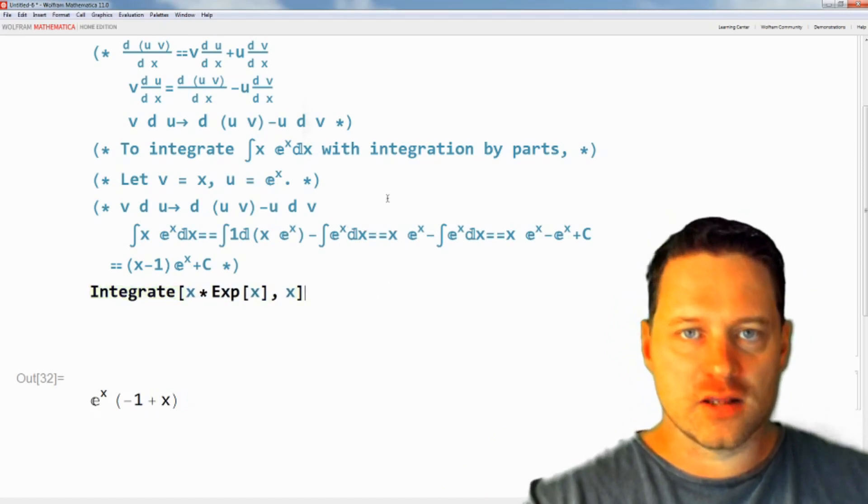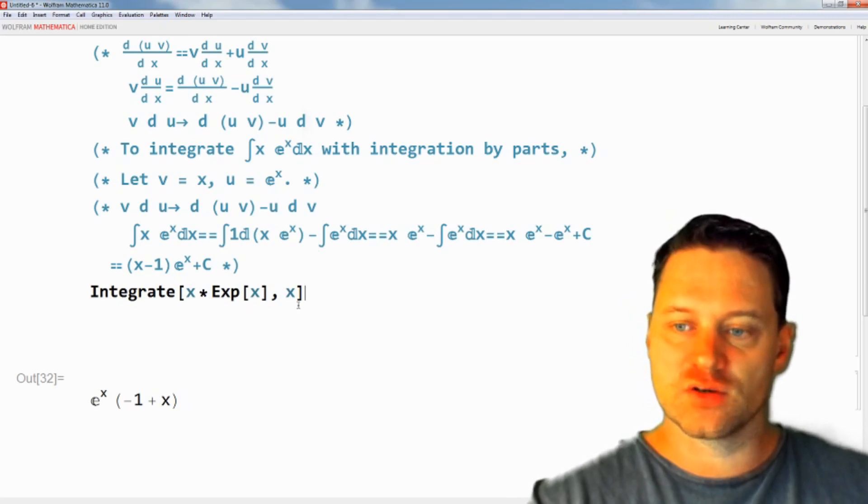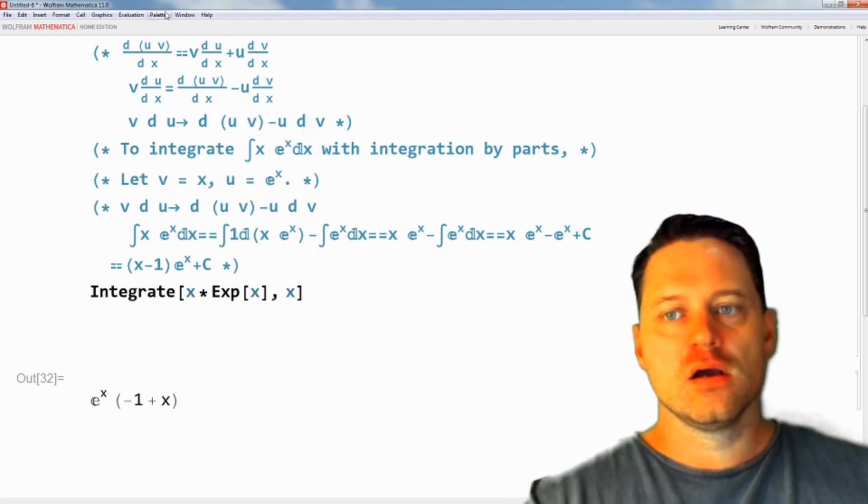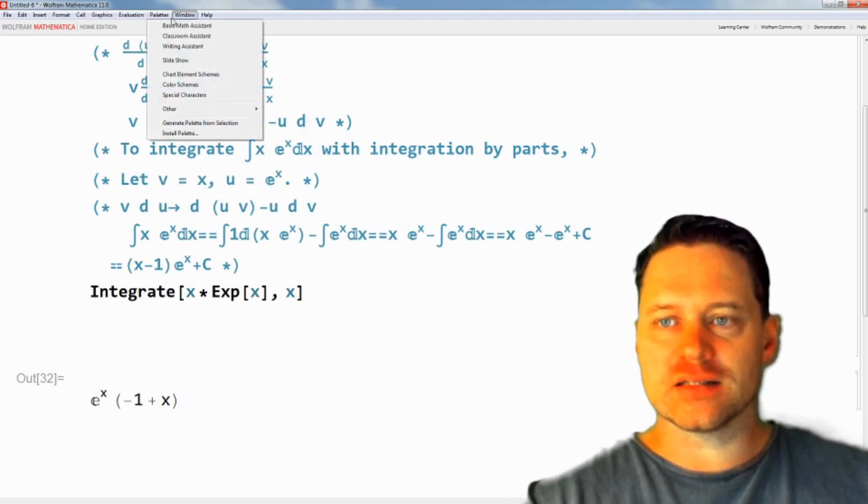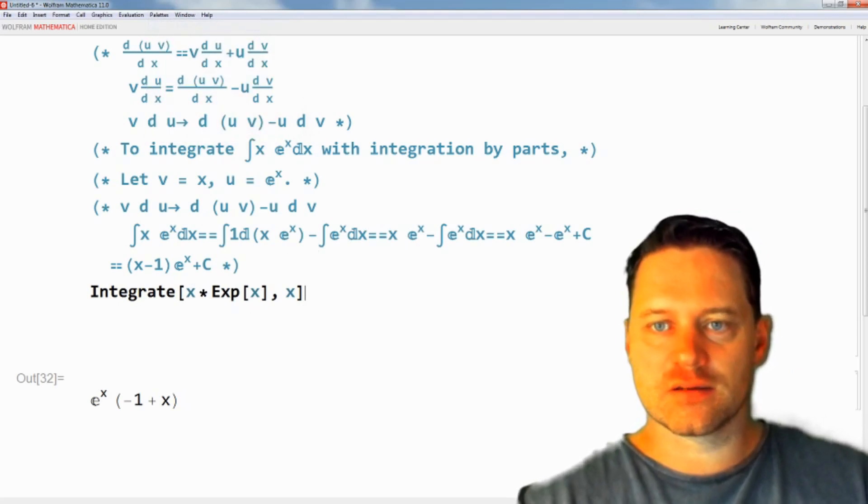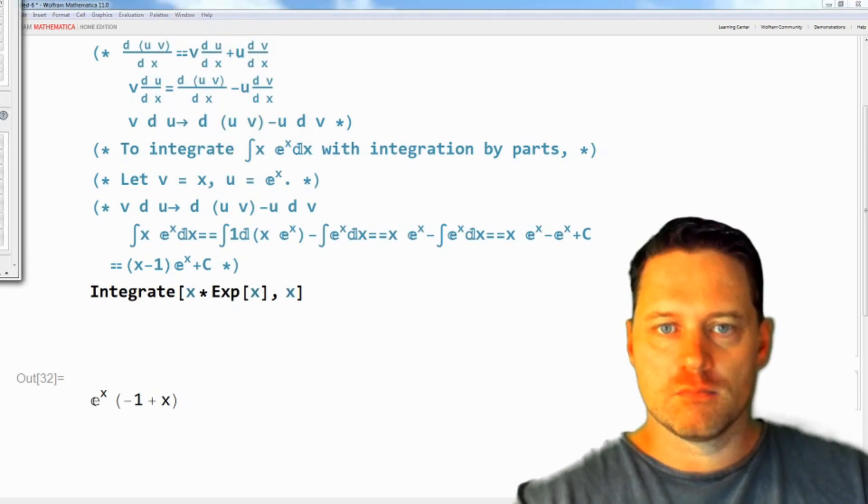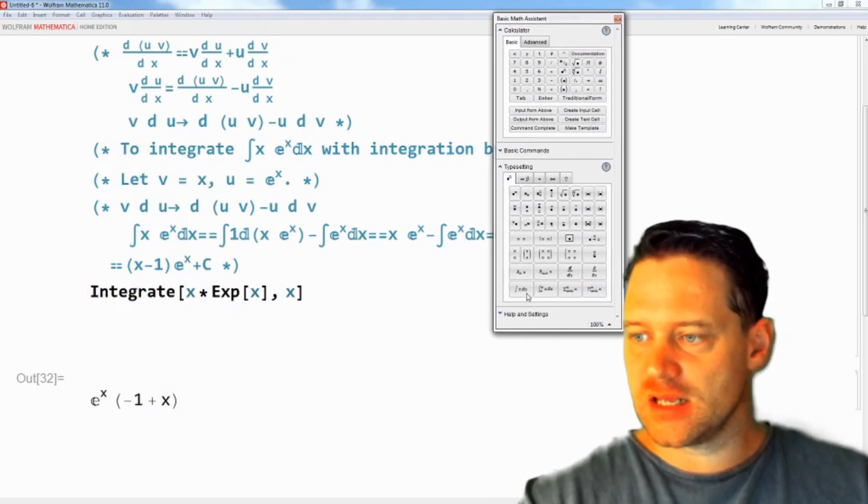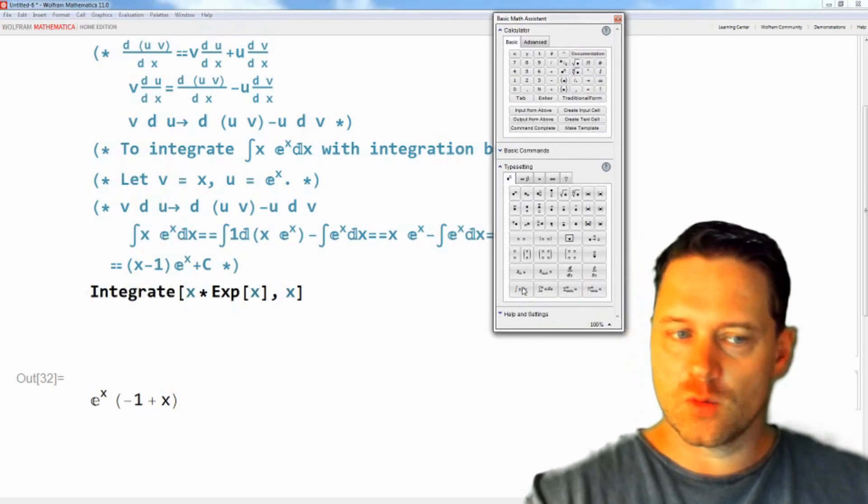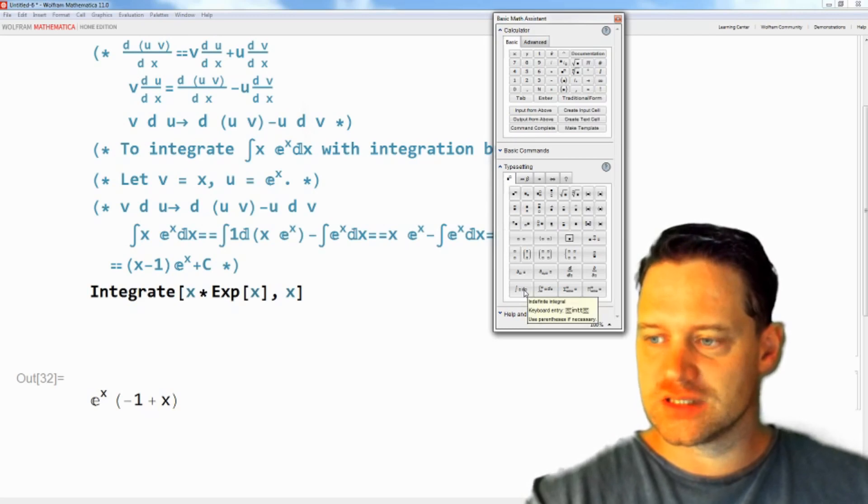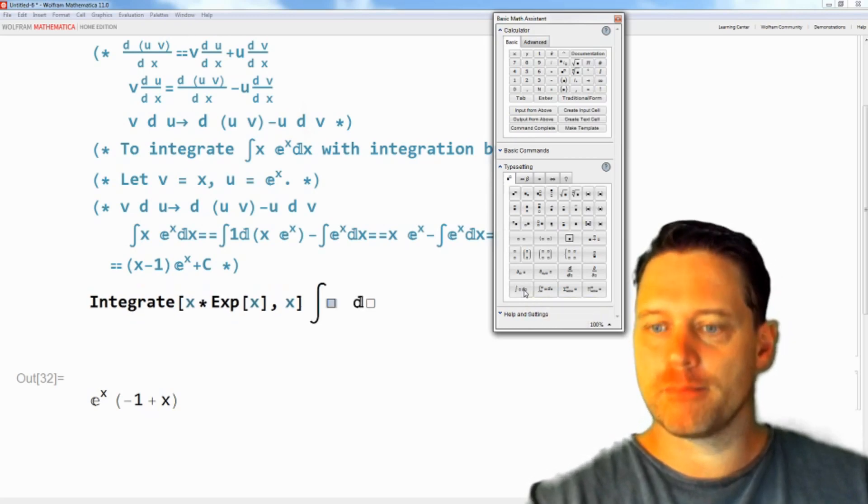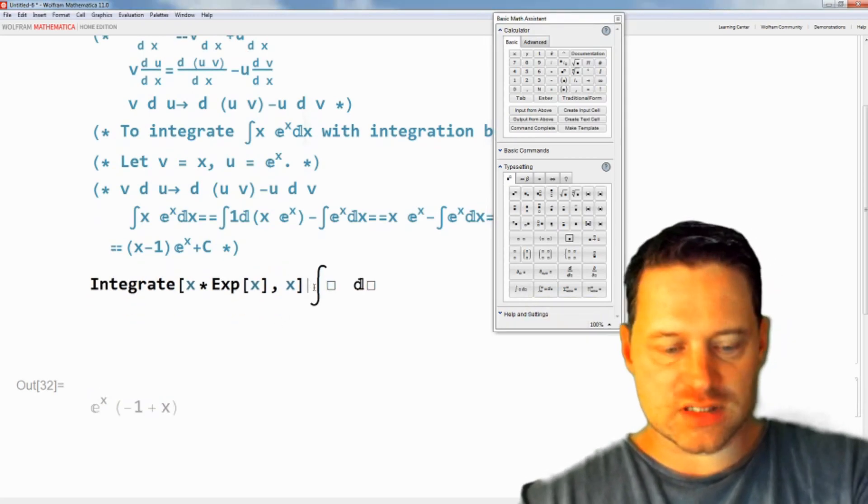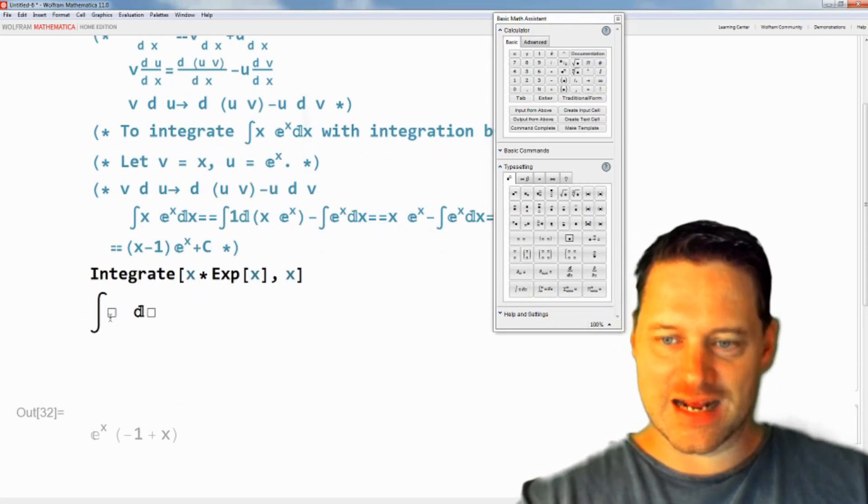Next, I want to show you a way that you might like to enter this if you don't like to write it out in words like I do. So we'll open up the palettes, Basic Math Assistant, move it over so I can show you. Down here at the bottom left, we have a button that shows this integral sign. I'm going to click it and I'll move it down to the next line.